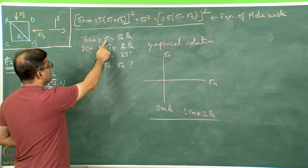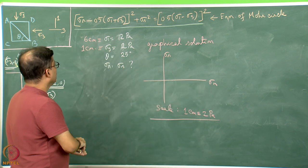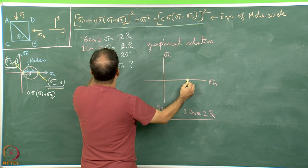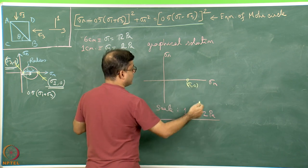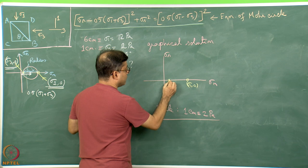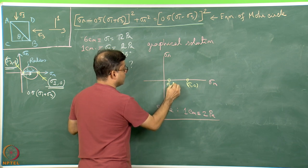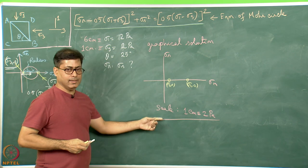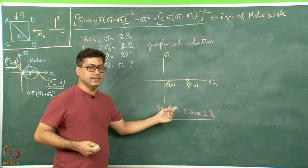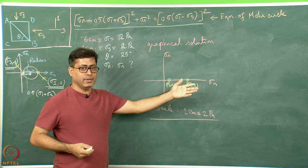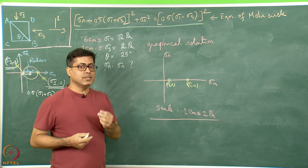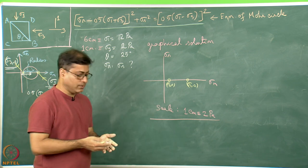Next, I will plot sigma 1 and sigma 3 manually on the sigma N axis. From here I will move 6 centimeters and write this point as (sigma 1, 0), which has coordinate (6, 0). Sigma 3 will be plotted at 1 centimeter, with coordinate (sigma 3, 0). The scale should be defined so the Mohr circle does not run off the page but is also not too small to work with.